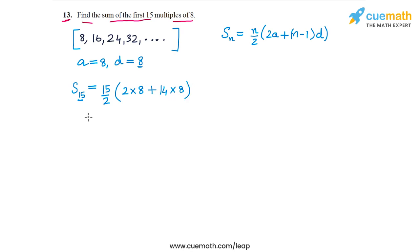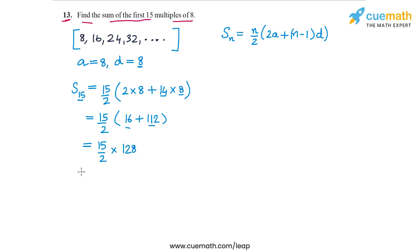14 into 8 is 112, so we get 15/2 × (16 + 112) = 15/2 × 128. Dividing 128 by 2 gives 64, so we get 15 × 64 = 960. The sum of the first 15 multiples of 8 is 960.